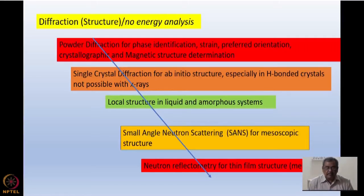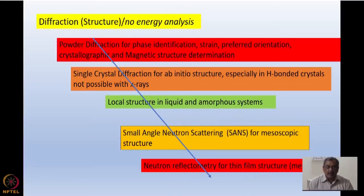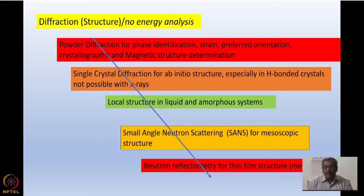I will discuss some of the techniques, and most importantly I will introduce you to crystallography and magnetic structure determination. Together with X-ray crystallography, this is required for various samples. If you can make a good single crystal — because in neutron diffraction, not only do you need a single crystal for ab initio structure determination, but you also need a slightly larger single crystal because neutron intensity is poorer. Still, in the case of hydrogen-bonded crystals which cannot be studied with X-rays, single crystal diffraction is done.